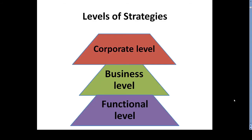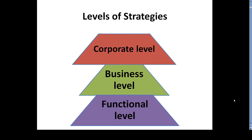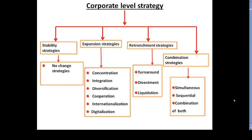There are three levels of strategy formulation: corporate level, business level, and functional level. That means at every level of the business, strategies are formulated. In our syllabus we are going to learn about corporate level strategies. These include stability strategies, expansion strategies, retrenchment strategies, and combination strategies — four kinds of strategies under corporate level strategy.